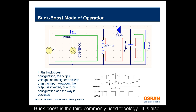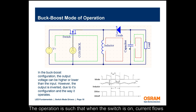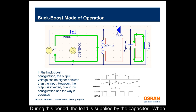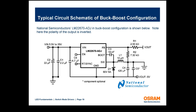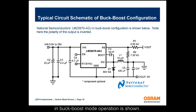Buck-boost is the third commonly used topology, also called inverter topology because the output polarity is inverted. When the switch is on, current flows through the inductor and energy is stored in it; during this period the load is supplied by the capacitor. When the switch opens, stored energy in the inductor is released, the capacitor charges up, and the load is also supplied. As an example, a National Semiconductor LM22670 ADJ in buck-boost mode operation is shown.